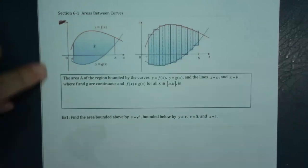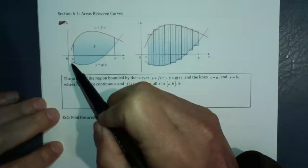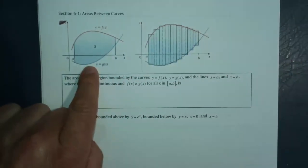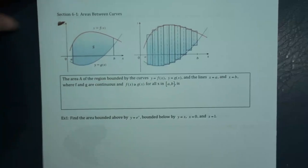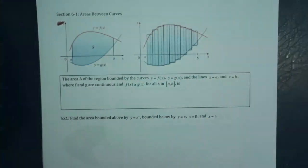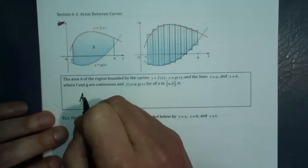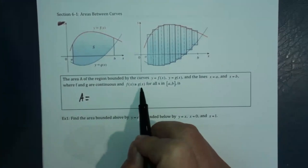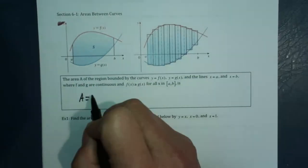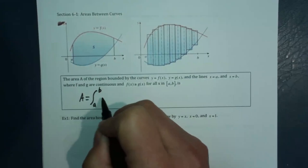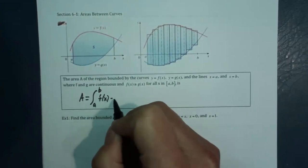We have a top curve and a bottom curve, and it doesn't matter if it's below the x-axis or not — we're always looking for the top one over the bottom one. Eventually we will be turning things sideways and determining the right one and the left one, but for now we're doing up and down. We break them up into partitions, add them up, and run into an integral. The area between two curves, assuming f(x) is bigger than g(x), is going to be the integral from a to b of f(x) minus g(x).